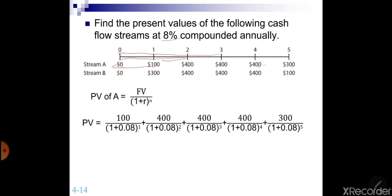The last one, if you look at the last 300, because you are bringing it back five years, it has power 5. 1, 2, 3, 4 and 5. The interest rate is 8% and you have taken the respective future values. If you calculate the amount, you get 1,251.24.